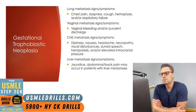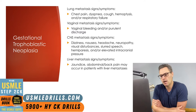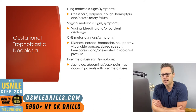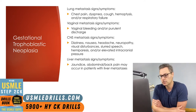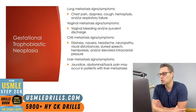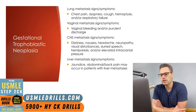If there's metastasis to the lungs, you might expect chest pain, dyspnea, cough, hemoptysis, and respiratory failure. If we have metastasis to the vagina, there may be vaginal bleeding and purulent discharge. CNS metastasis signs and symptoms include those consistent with increased intracranial pressure or intracerebral hemorrhage — so dizziness, nausea, headache, neuropathy, visual disturbances, slurred speech, and hemiparesis.